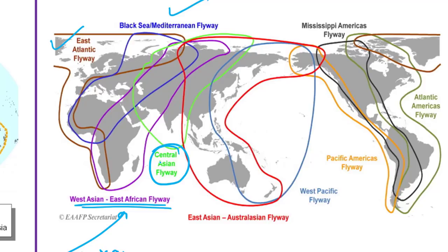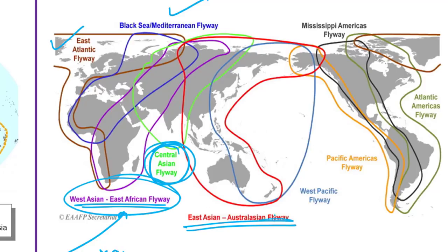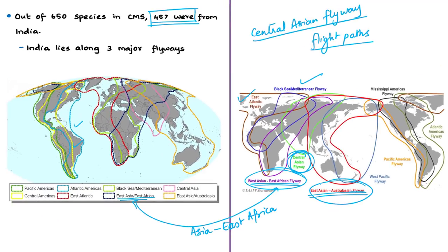The eighth flyway is the East Asia–Australasia flyway, which extends from Arctic Russia and North America to New Zealand. India lies along three of the eight flyways: the Central Asian Flyway, the Asian–East Africa flyway, and the East Asian Australasian flyway. This is cited as one of the key reasons why India is a temporary home to several migratory animals and birds.